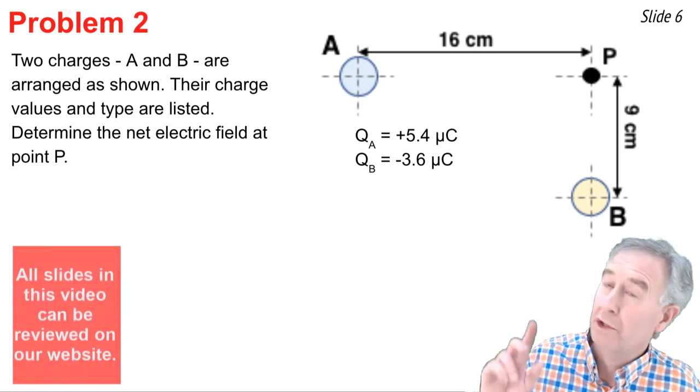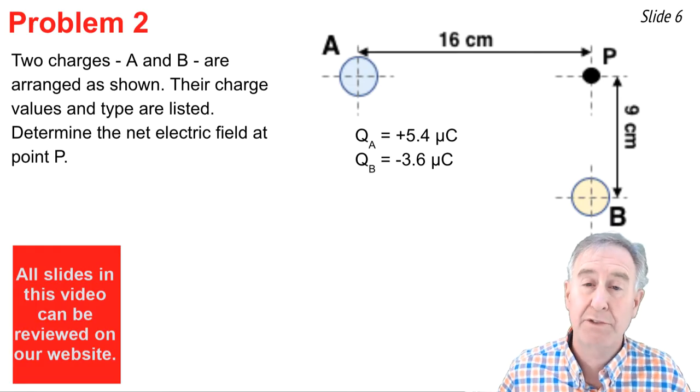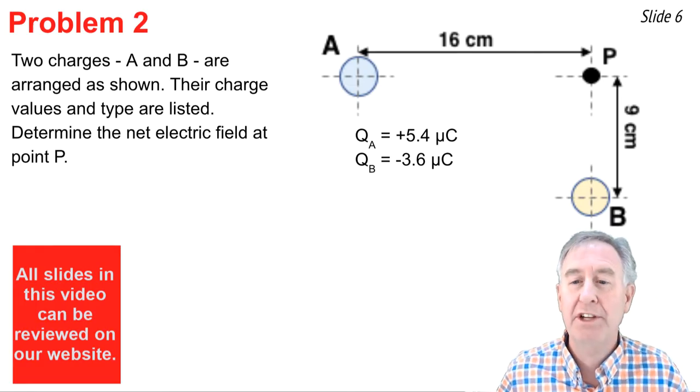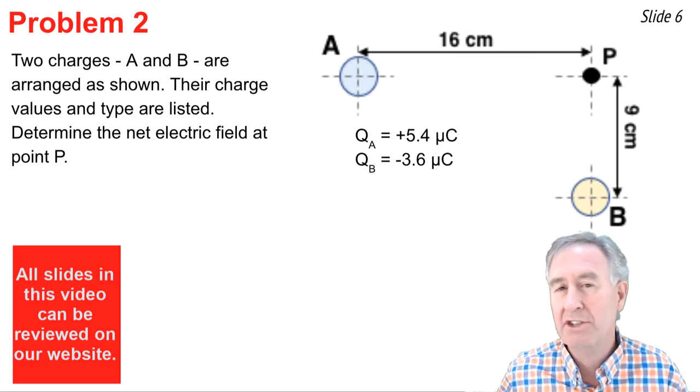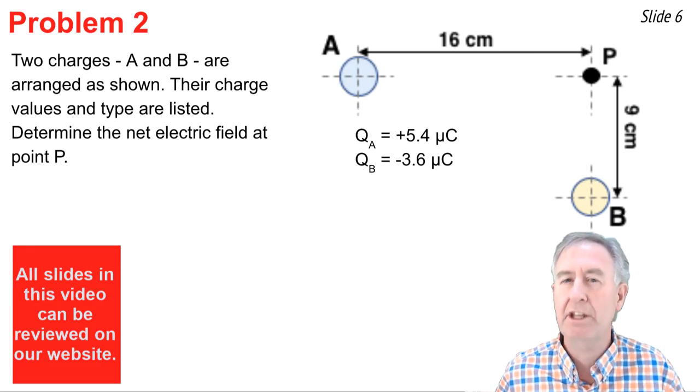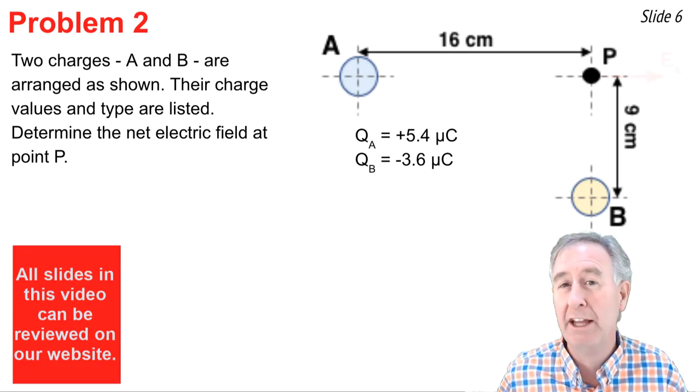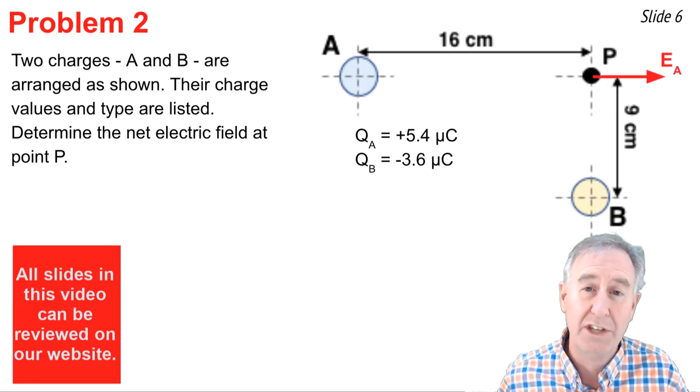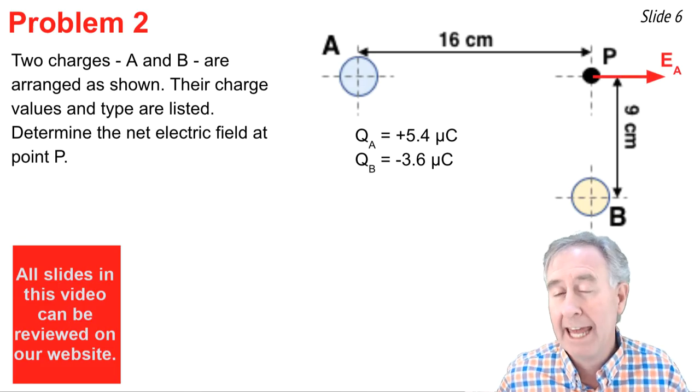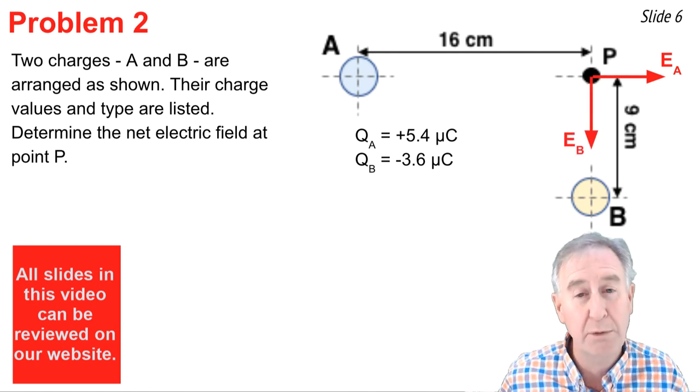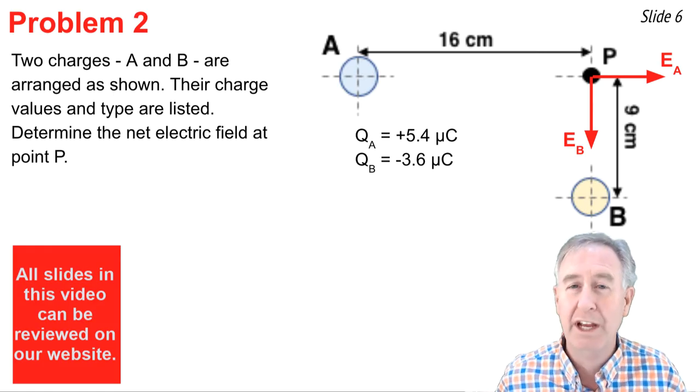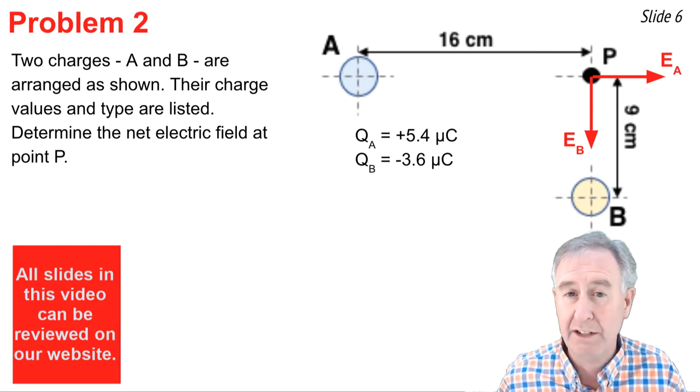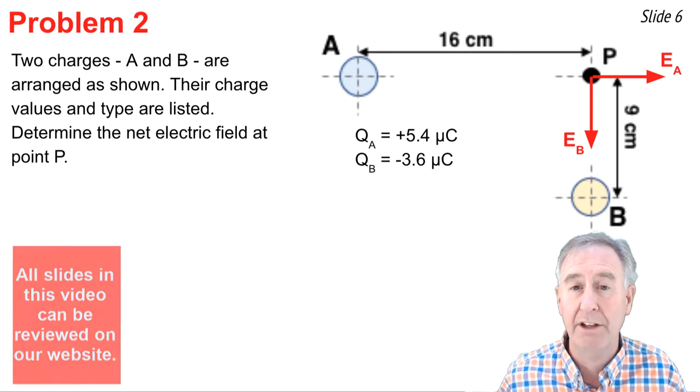In problem two, I have two source charges, A and B. The quantities of charge and the type are shown. They're distanced from a point P by 16 centimeters and 9 centimeters. And I wish to calculate the net electric field at point P. That's the net electric field, which is simply the sum of what you get when you find the electric field from A, which is directed to the right since A is a positive source charge, and the electric field caused by source charge B, which is directed downwards since B is a negative source charge. Once I calculate these two values, I can add them together as vectors and calculate the net electric field.